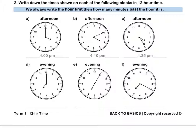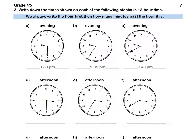Pause this video to complete question 2. Question 3. We must write down the times shown on each of the clocks. For A, it is half past 9, so we write 9.30 PM — it is in the evening. For B, it is 35 minutes past 9, so it is 9.35 PM because it is the evening. And now it is 40 minutes past 9 — it is not yet 10 o'clock so we don't write 10 as the hour. It is 9.40 PM.